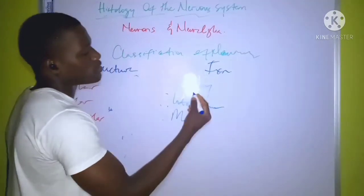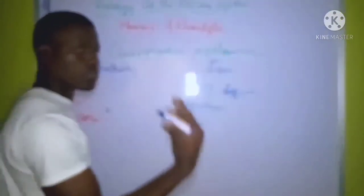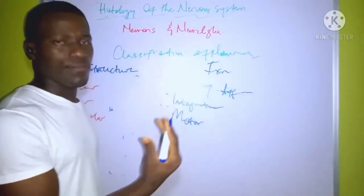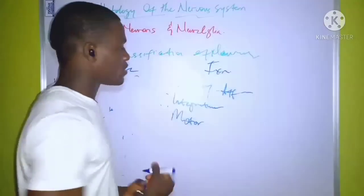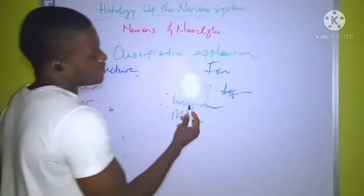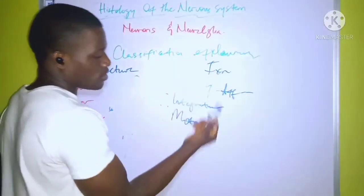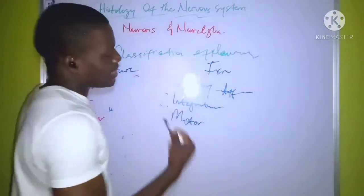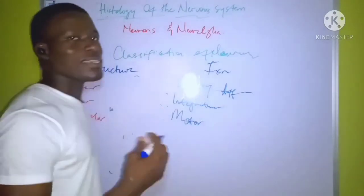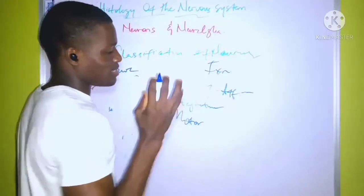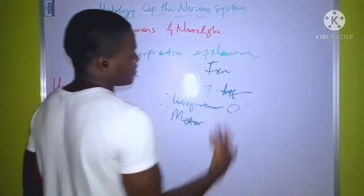The sensory neuron is also called the afferent neuron, in that it receives impulse from the external or internal environment and sends this impulse to the central nervous system. The integrative neuron is an intermediate neuron that sits between the sensory neuron and the motor neuron — it acts as a middleman and helps to process the impulse.